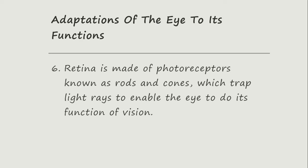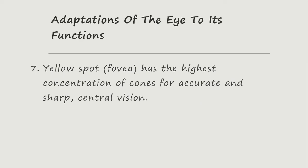The retina is made up of photoreceptors known as the rods and the cones, which trap light rays to enable the eye to perform its function of vision. The yellow spot, that is the fovea, has the highest concentration of cones for accurate and sharp central vision.